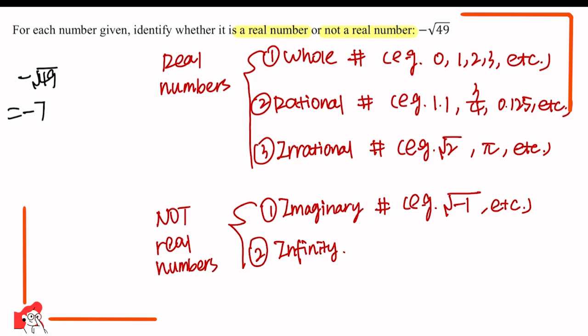Minus 7 is included in the whole numbers, so minus the square root of 49 is a real number.